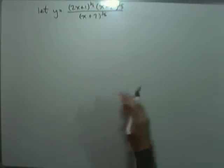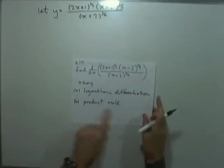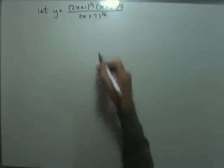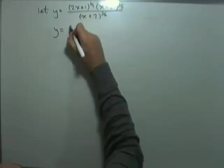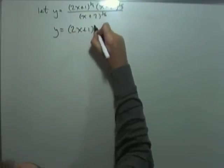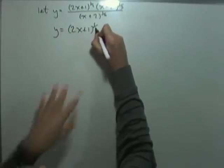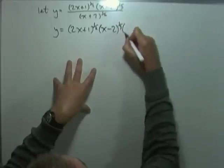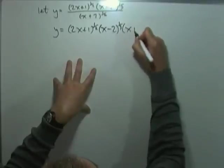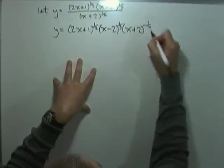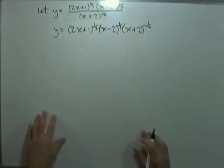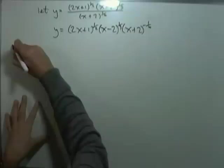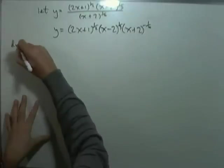Right, the board is cleared. Now the next part: doing the same again using the product rule. I'll write this out as a product: (2x + 1)^(1/2) times (x − 2)^(1/3) times (x + 2)^(−1/4). This is going to take a bit of space, so differentiating using the product rule.